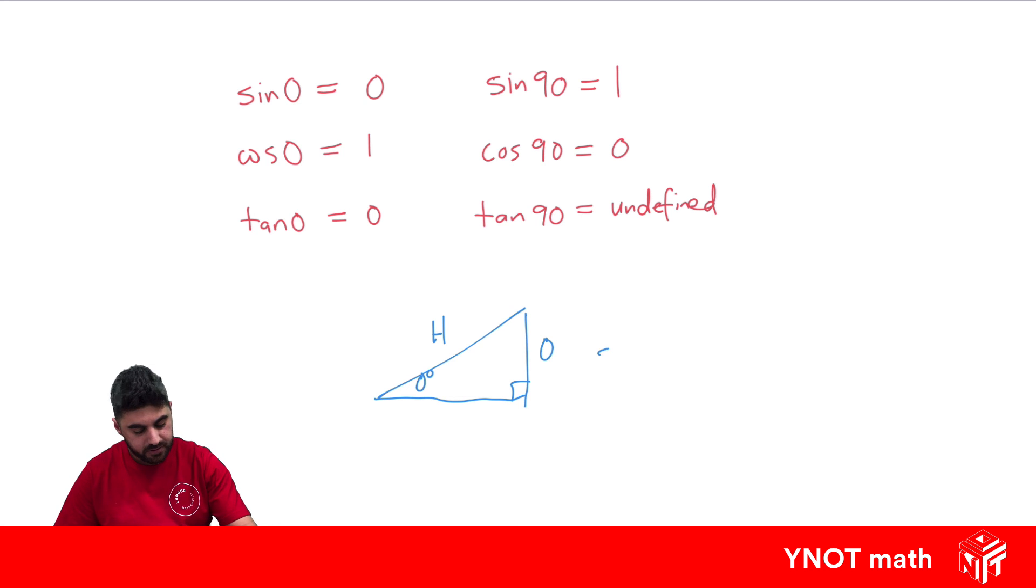When we do sine, sine 0 is going to be that opposite distance, which is 0, over our hypotenuse distance. And 0 over anything is 0. So that's one way to look at it.